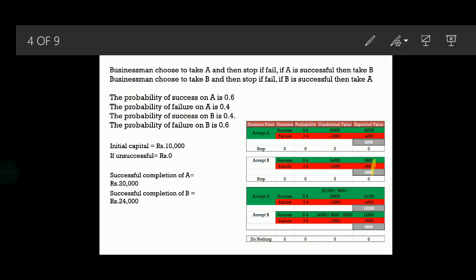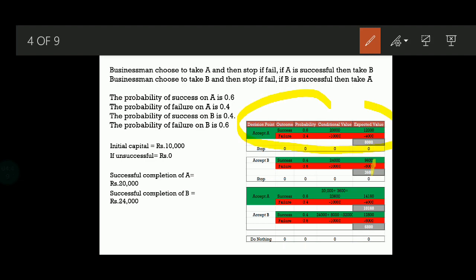So that is how you find the expected value of accepting A. If you are taking A and it is a success, the probability is 0.6. If it is a failure, the probability is 0.4. The conditional value is rupees 20,000 if successful — you will get 20,000 — and if it is a failure, you will lose 10,000. You multiply probability with conditional value: 20,000 into 0.6 gives 12,000. For failure, 0.4 into minus 10,000 gives minus 4,000.